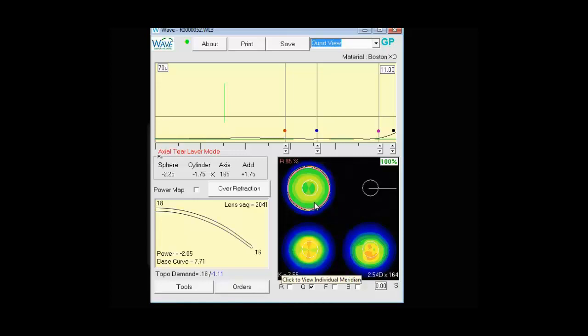The upper left is your front curvature view. This is the front curvature of the contact lens. Upper right is a simulated fluorescein pattern. The lower left is the back curvature of the contact lens. And the lower right is the view of the cornea.